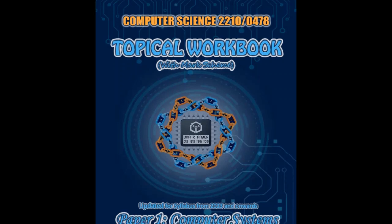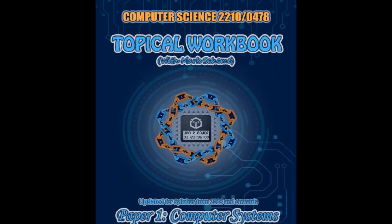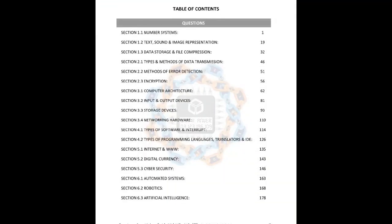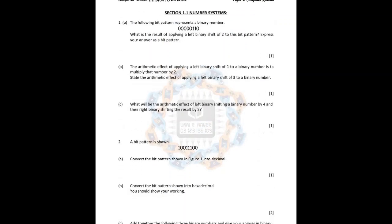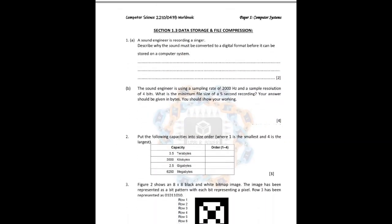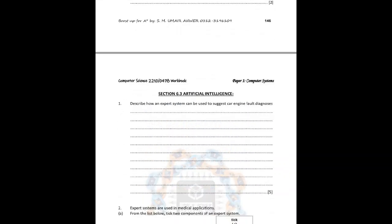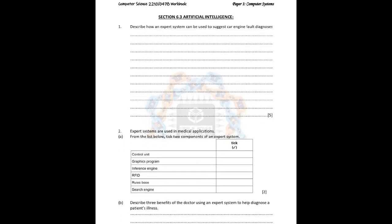Let me introduce the topical workbook for computer science 2210 or 0478. This is workbook one for Paper One — computer systems. As you can see from the table of contents, I've included questions on each and every subtopic from the syllabus along with the mark scheme. There are many more questions where these come from — around 18 to 20 questions on average for each and every topic.